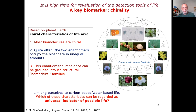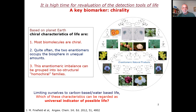We have only one example, based on planet Earth. The chiral characteristics of life are three. First, most biomolecules are chiral. Second, the two enantiomers often occupy the biosphere in unequal amounts — the most celebrated examples are the amino acids and the sugars. And third, this enantiomeric imbalance can be grouped into isostructural homochiral families. I'll make a brief comment about homochirality later on.